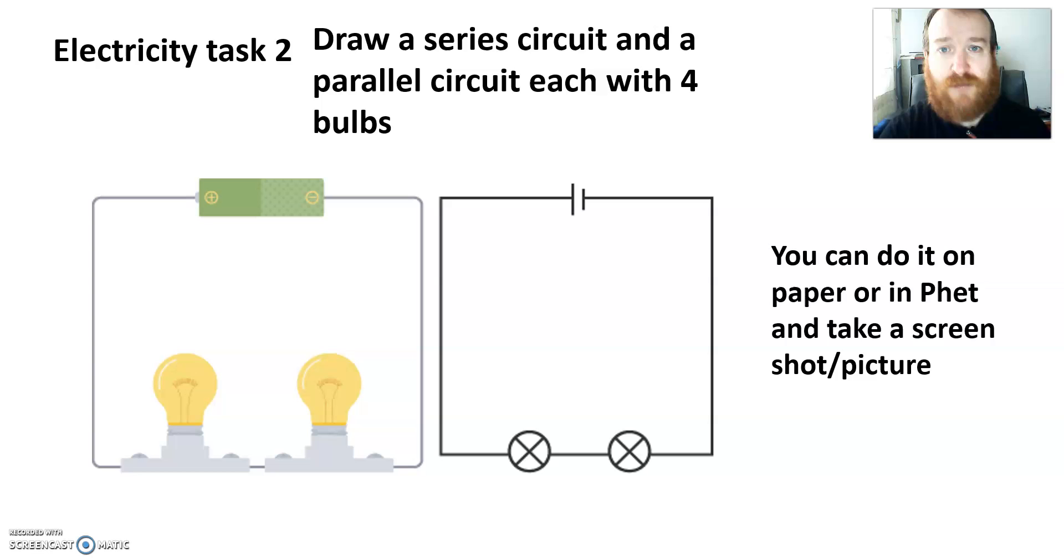The second task is to draw two types of circuits: draw a series circuit and draw a parallel circuit. Now say out loud what type of circuit this is in three, two, one. It's a series circuit. If you said series, well done. If you said parallel, it's not a parallel circuit. There are no junctions. There's only one way that the electricity can flow. There's only one loop. So this is a series circuit.